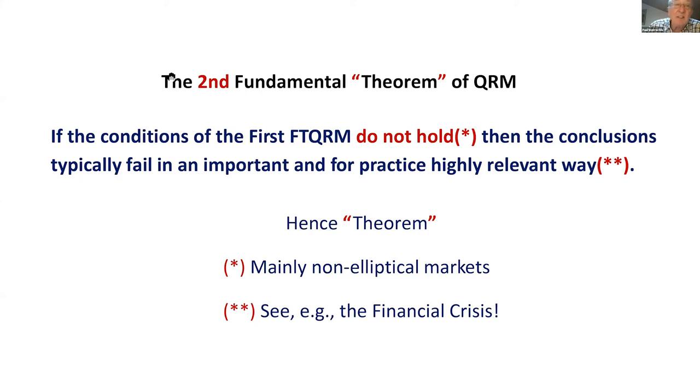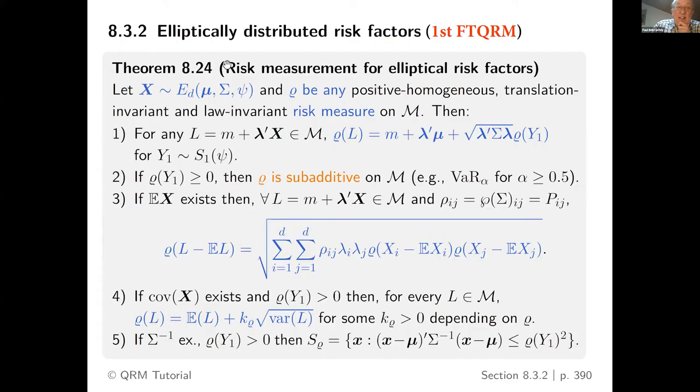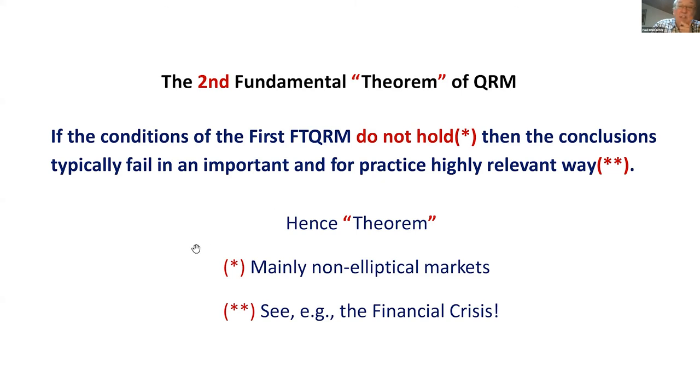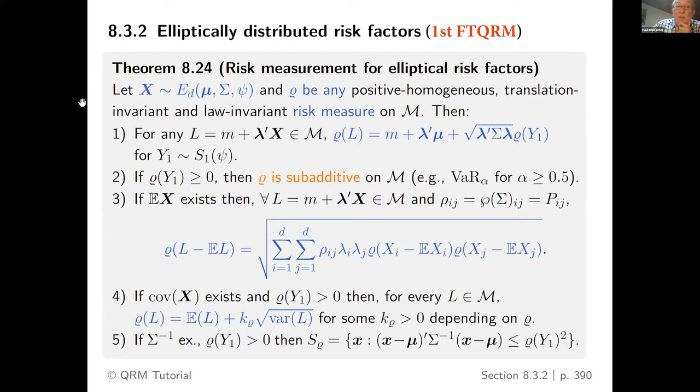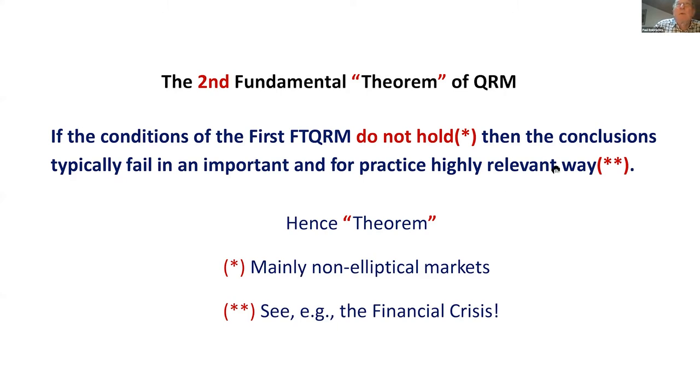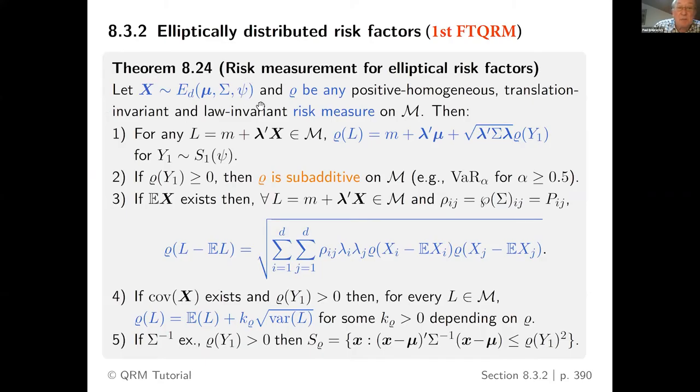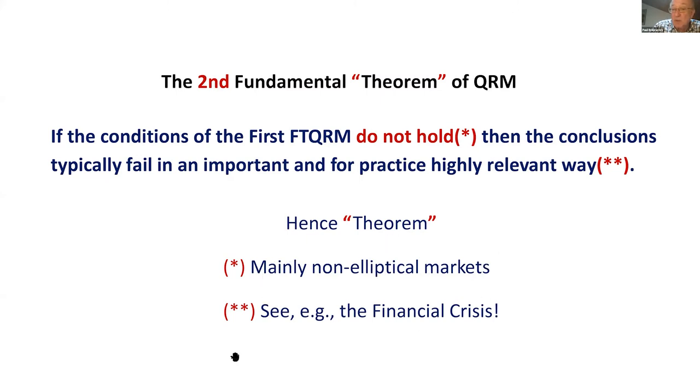Now of course, this is not reality. So my talk will be much more on the second fundamental theorem. And now you see theorem is here in brackets, because there are many of those. The main statement is that if the conditions of the first fundamental theorem, i.e. if your underlying risk factors are not elliptical, then all the properties that we have in this very nice world typically don't hold and really go wrong in many ways. And this is the essential point, of course, reality. Wall Street is much more about markets that don't satisfy these nice symmetric properties.